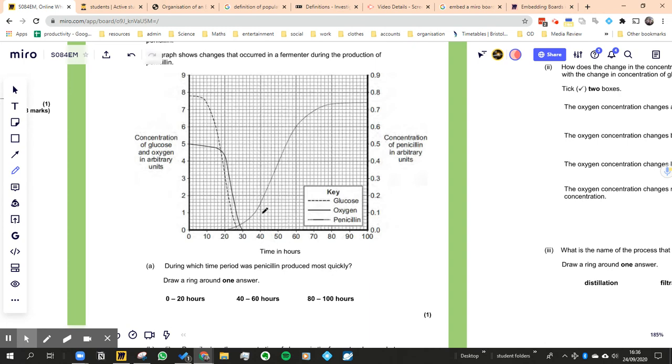It's going to be the bit with the steepest gradient. So it's from here to here because that's the steepest part of the entire curve. So between 40 and 60 hours is the answer.